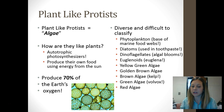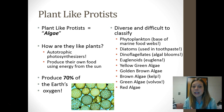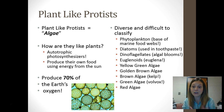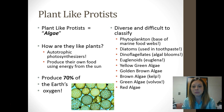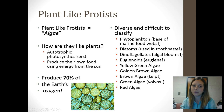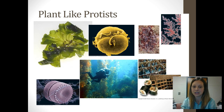Plant-like protists are really diverse, which actually makes them difficult to classify. There's phytoplankton — the producers at the base of a marine food web. There are diatoms, dinoflagellates (which we learned about when we studied algal blooms), euglena, yellow-green algae, golden-brown algae, brown algae (also called kelp), green algae called volvox that live in colonies, and red algae. Lots of different types of plant-like protists.